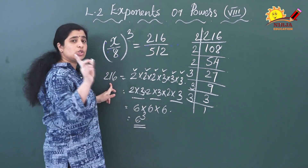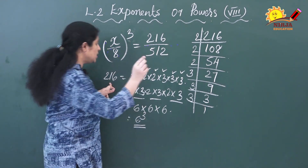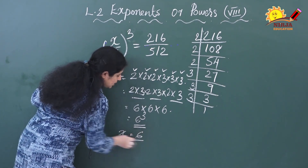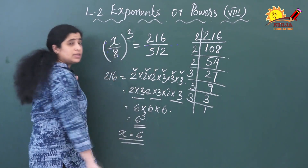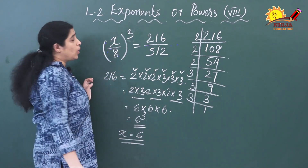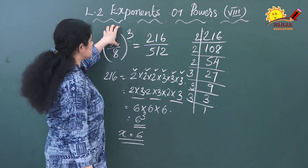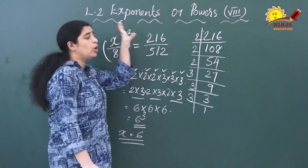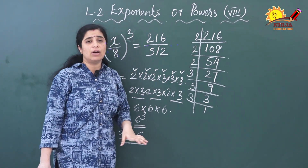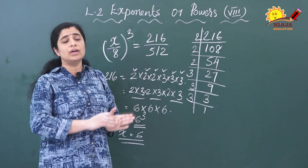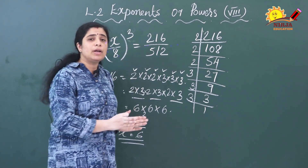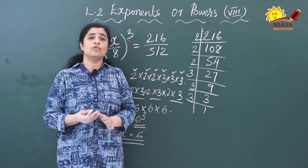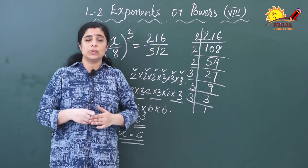The value is 216. Therefore, the value of x is 6. I hope all of you have understood how to convert a simpler form into an exponential form and vice versa.